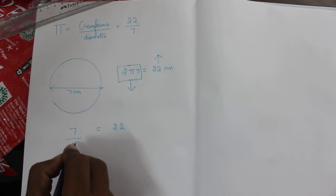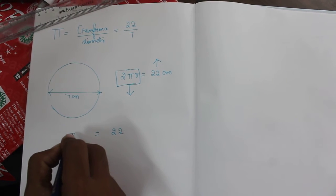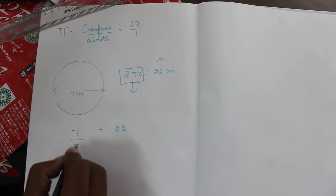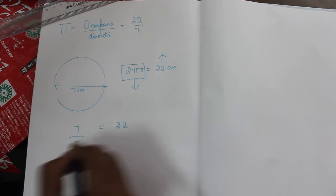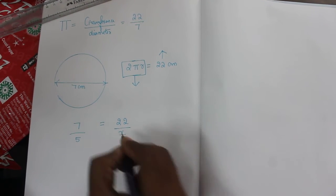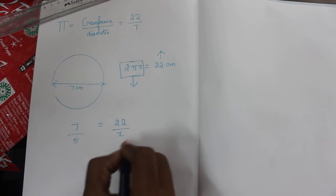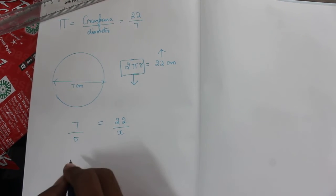So here I put 5. If you have 7 cm, the circumference will be 22. Now I have 5 cm diameter of circle. What will be the circumference of that circle? I don't know the value of circumference, that's why I put x here.